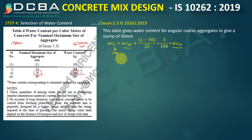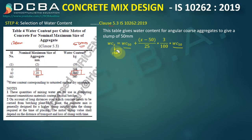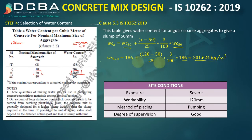For detailed explanation of all steps, refer to lecture 14 (link in description). Applying the formula for 120 mm slump: WC at 120 mm = 186 + [(120 − 50)/25] × (3/100) × 186 = 201.624 kg per cubic meter of concrete.